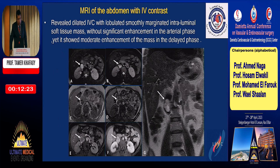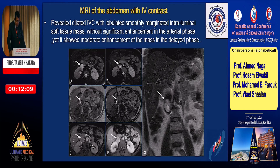MRI of the abdomen with intravenous contrast revealed a dilated IVC with a lobulated, smoothly marginated intraluminal soft tissue mass. There was no significant enhancement in the arterial phase, but the mass showed moderate enhancement in the delayed phase. This is the mass inside the IVC, attached to one side, and it is lobulated.